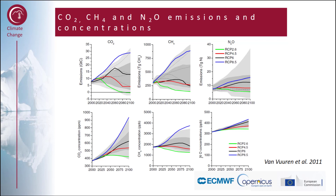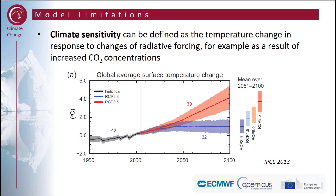Under RCP 2.6, the future CO2 concentration will be about 400 parts per million — similar to the concentration today. This shows how hard it is to achieve RCP 2.6. Another source of uncertainty is the climate sensitivity.